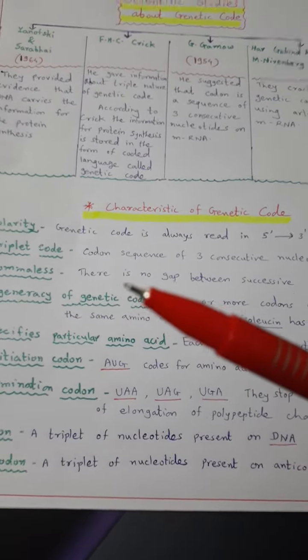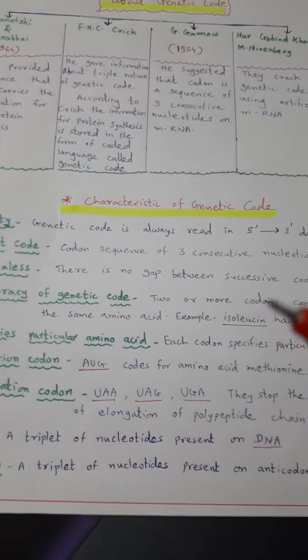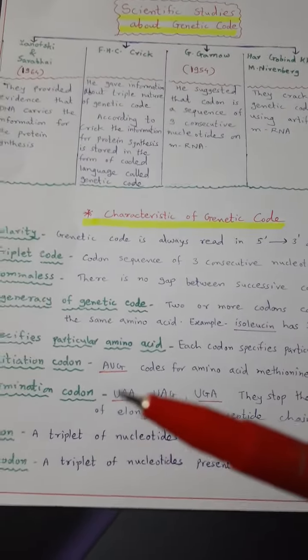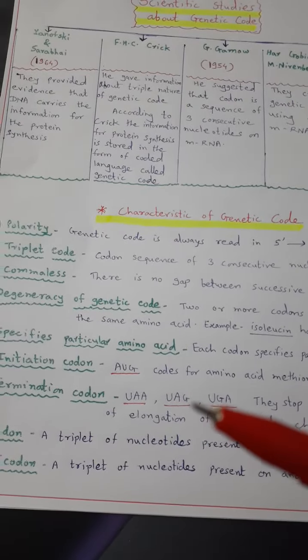Commaless. There is no gap between successive nucleotides or codons. In UAA or UAG, there is no comma.